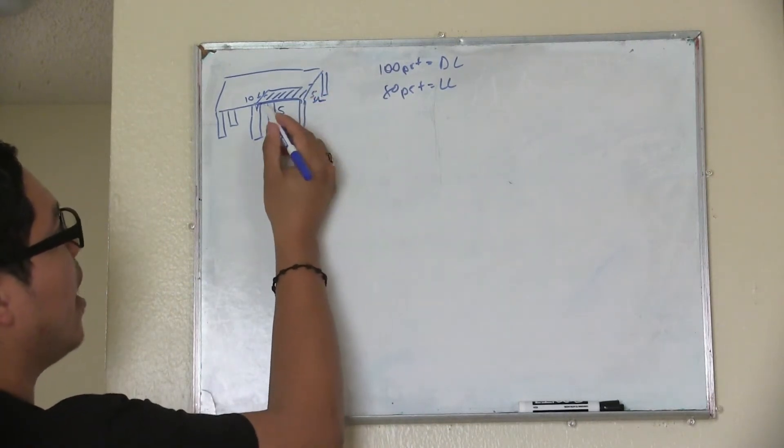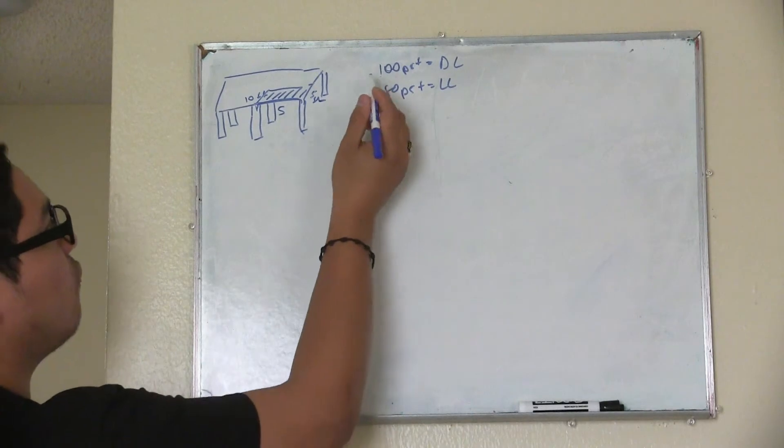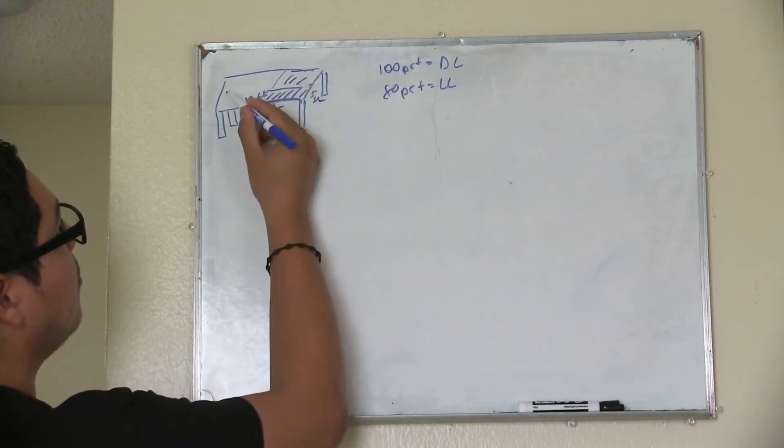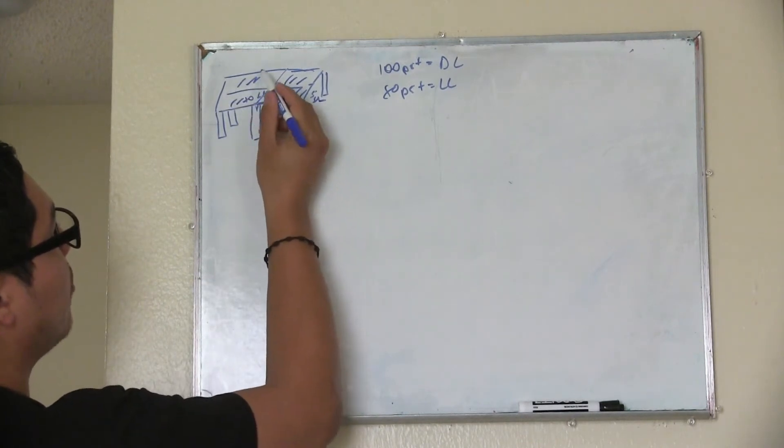But tributary area, it means how much load it is taking from all this load. So for example, this load, this is going to be taking this, this beam right here, these beams are going to be taking this, and these beams are going to be taking this.